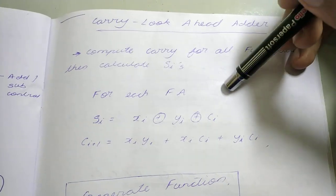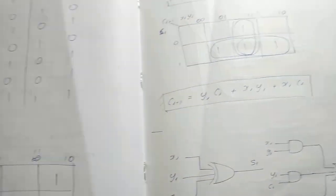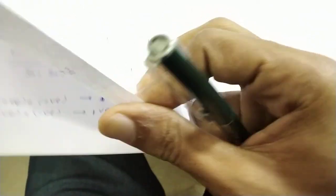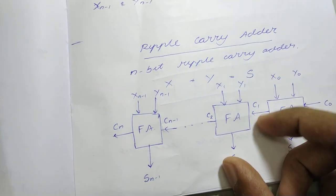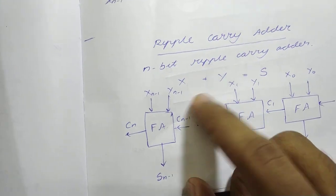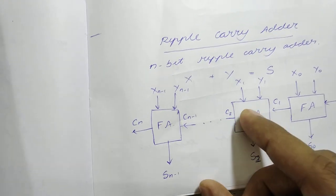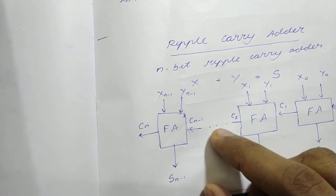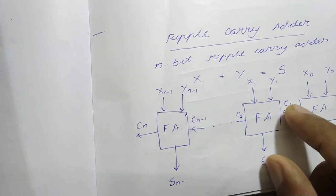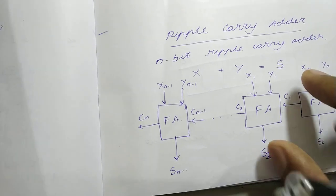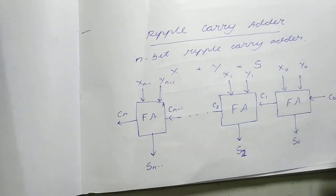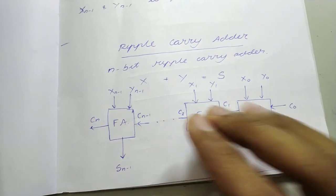In a ripple carry adder, each of the full adders must wait for the carry to come before it can start working. This makes the process more tedious and it takes more gate delays.